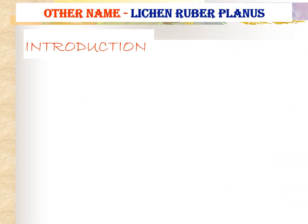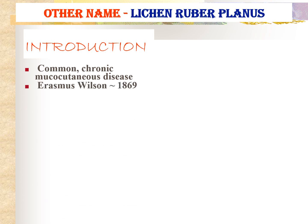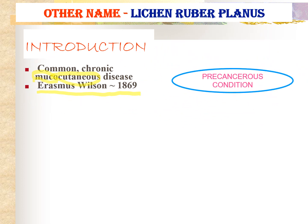The other name for lichen planus is lichen ruber planus — this is sometimes asked in viva. This is one of the chronic mucocutaneous diseases of the body, meaning it can affect both mucosa and skin. This disease was first described by Erasmus Wilson, a British physician, in 1869. It is considered a pre-cancerous condition, meaning there are chances of cancer developing from it.